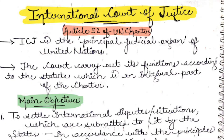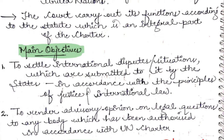The main objectives of ICJ are basically two. The first is to settle international disputes or situations which are submitted to it by states, in accordance with the principles of justice and international law.